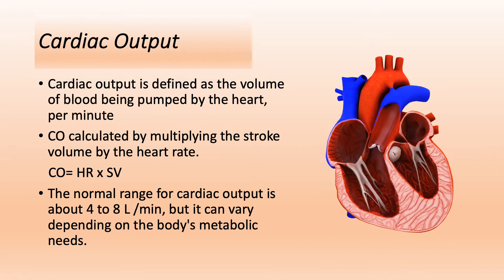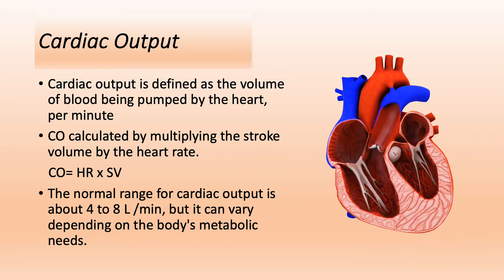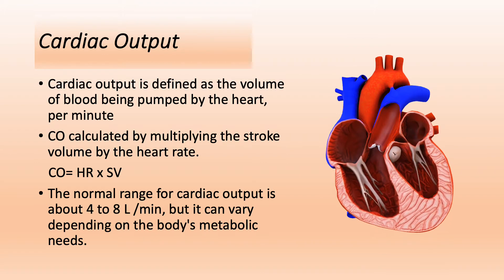Cardiac output is defined as the volume of blood being pumped by the heart per minute. Basically, in one minute, what is the volume of blood pumped by the heart — we call that cardiac output. Cardiac output is calculated by multiplying the stroke volume, symbolized as SV, by the heart rate, symbolized as HR. So we can calculate CO as heart rate times stroke volume.